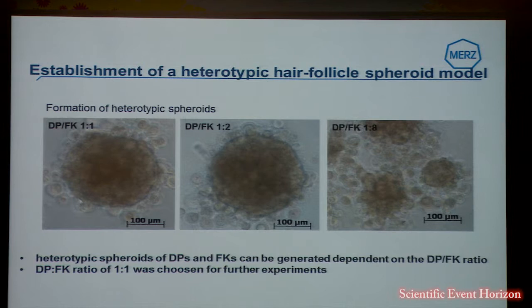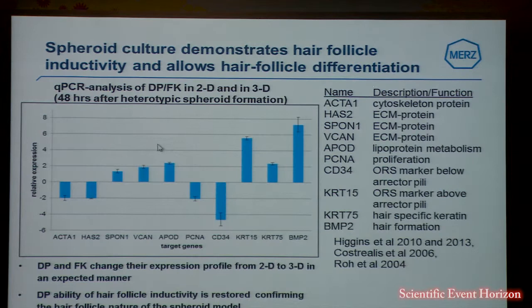To establish a heterotypic hair follicle spheroid, we used different ratios of these two cell types: 1 to 1, 1 to 2, and 1 to 8. Spheroids could be detected with a ratio of 1 to 1 and 1 to 2, but by increasing the number of keratinocytes, only cell aggregates but no spheroid could be observed.